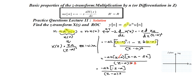Taking the minus sign outside changes signs to positive, giving the final answer. The ROC is the same as the previous case — outside the circle with radius a, i.e., |z| > |a|.